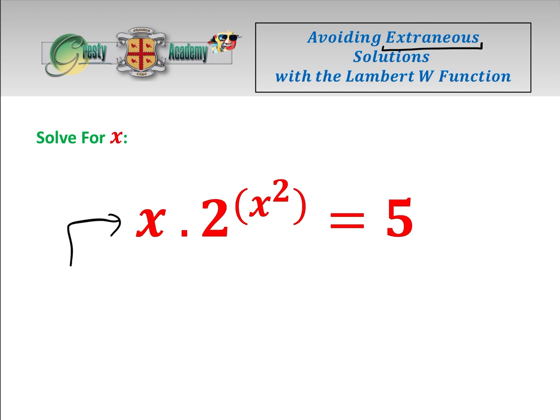having an extraneous (i.e., a false) extra solution, so we have to be careful because we're going to square and then take the square root in order to solve this with the Lambert W function. Let's go.